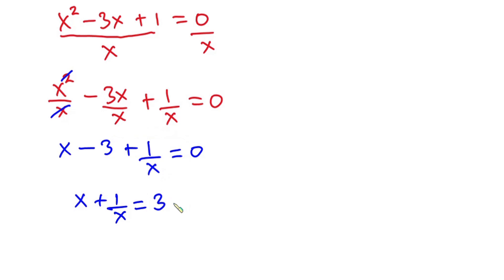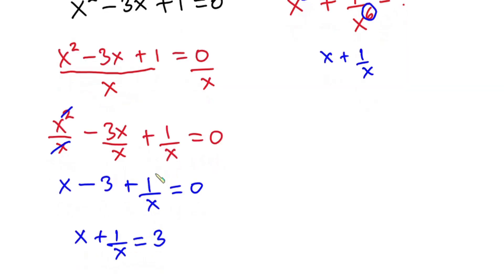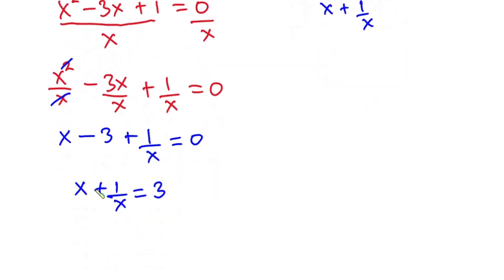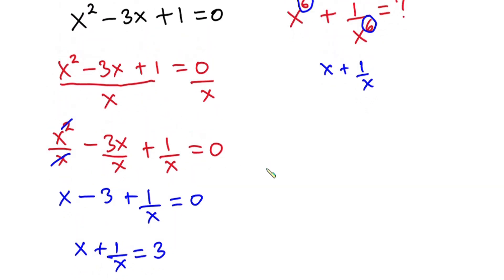The reason we divided each side by x is that, ignoring the higher powers for a moment, this becomes x plus 1 over x — which is exactly what we find here. So we've been able to find the skeletal part of the solution. Now let's make progress.